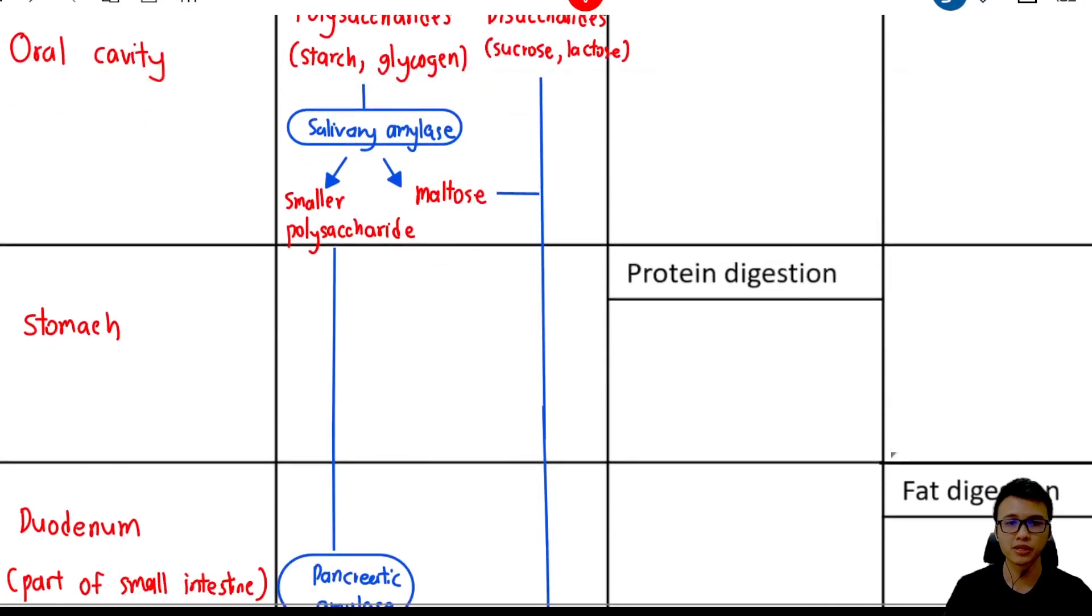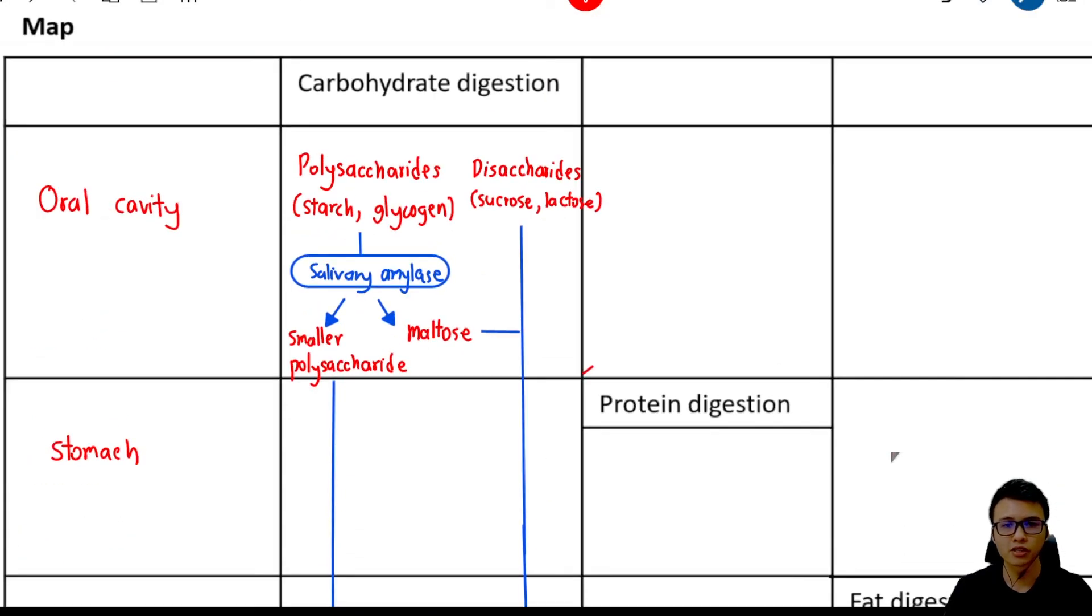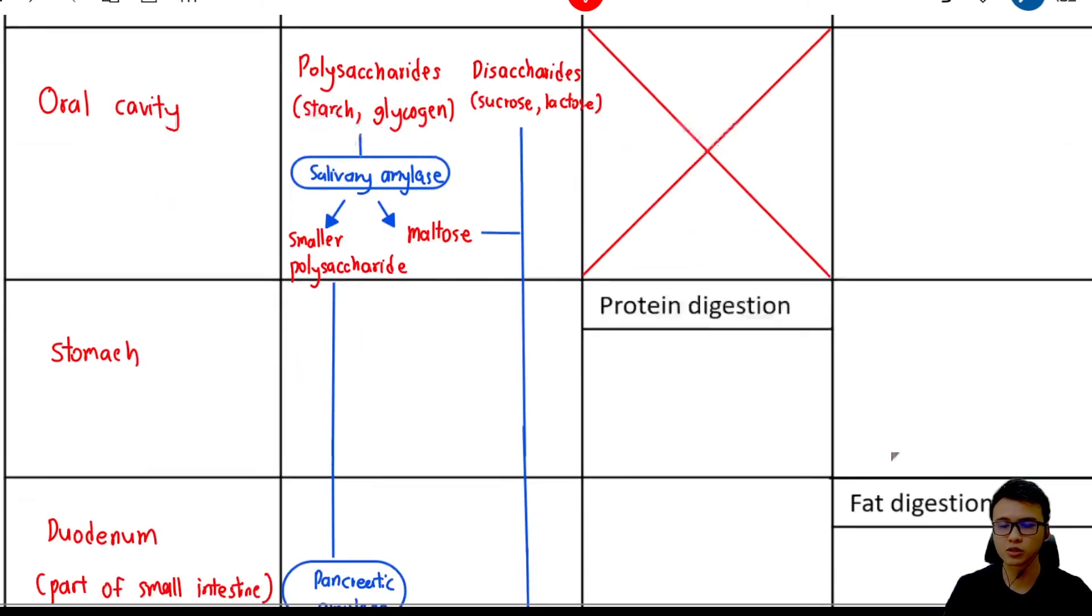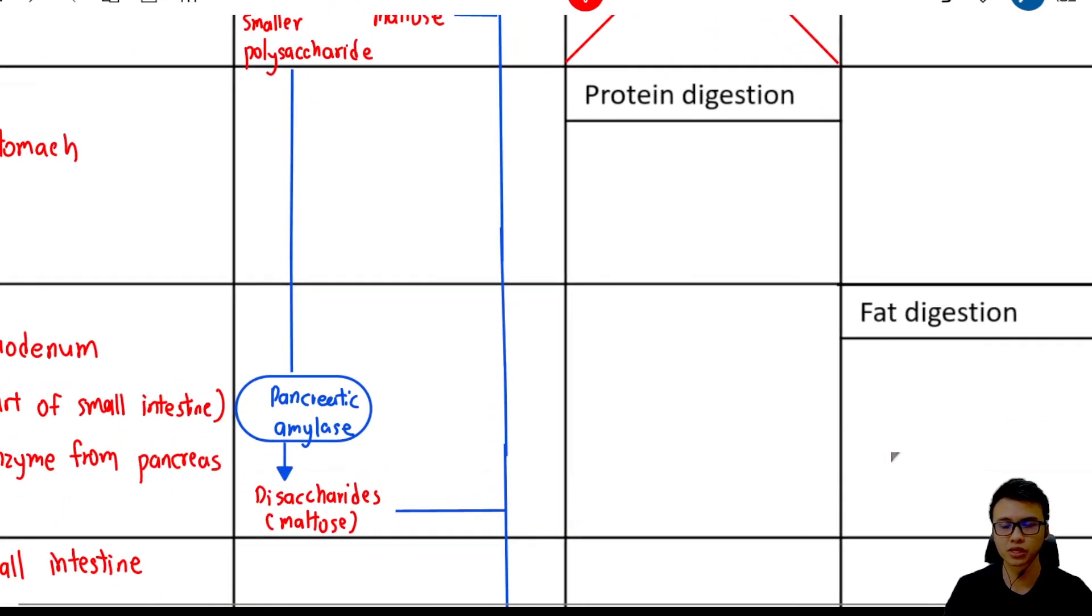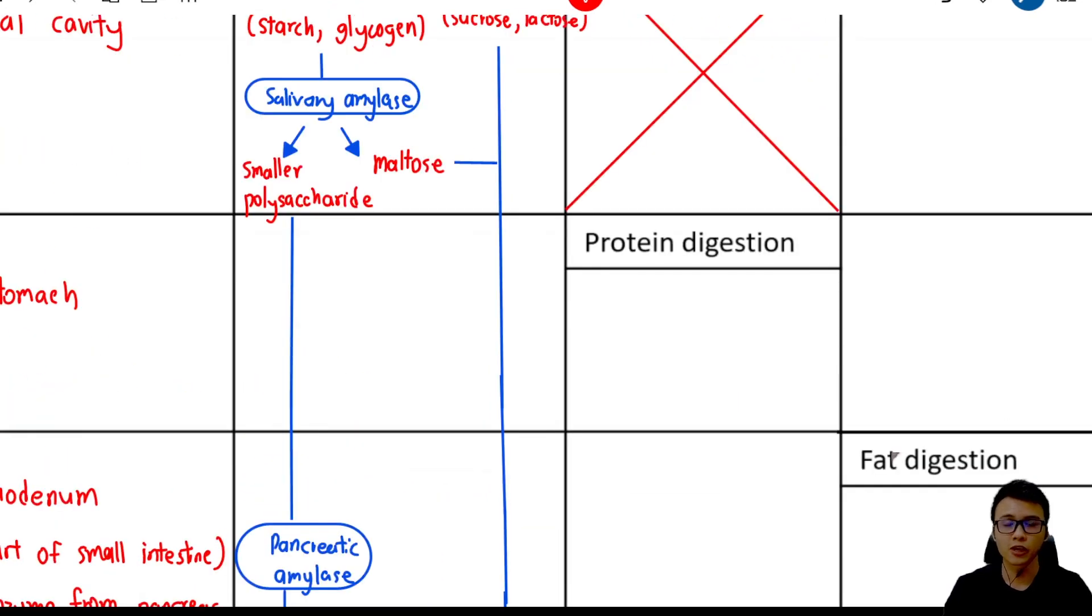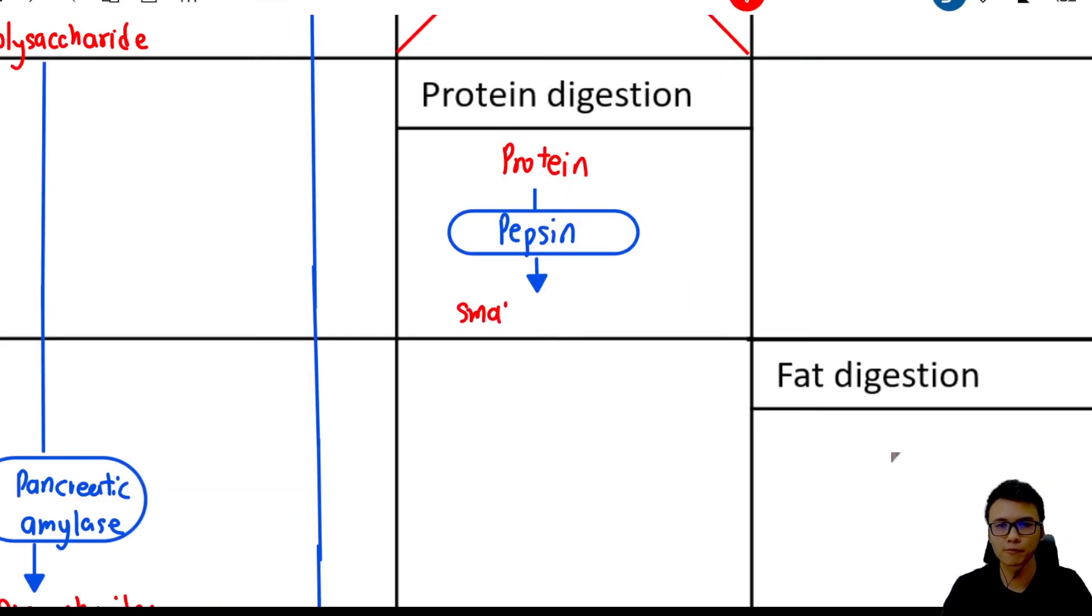Let's move on to protein digestion. Remember, there is no protein digestion in our mouth. Protein digestion will start from our stomach. If we eat meat, we are actually consuming protein. This protein will be digested by the enzyme in the stomach called pepsin to form small polypeptides.